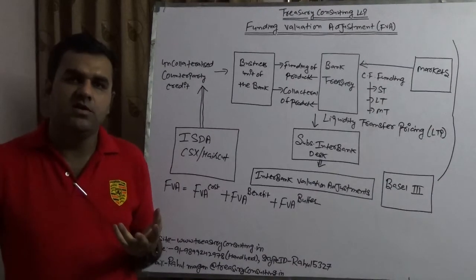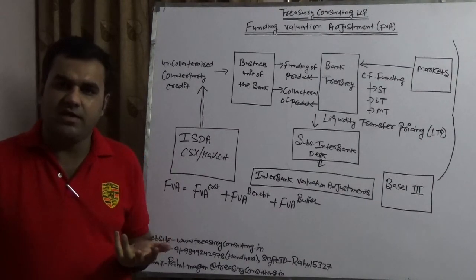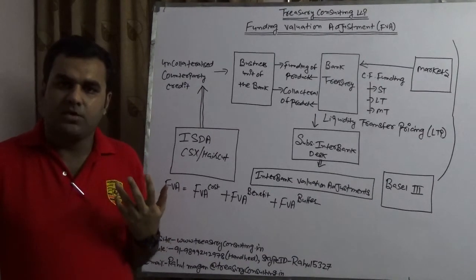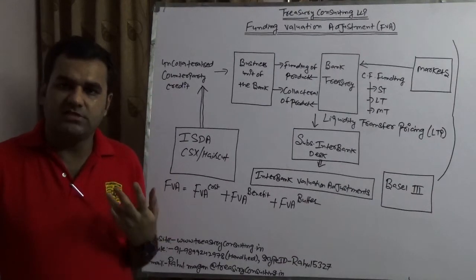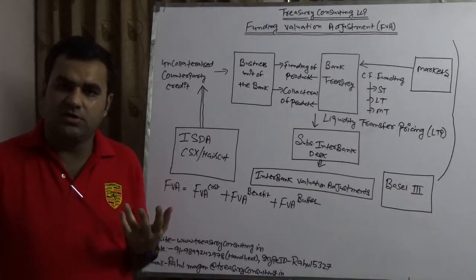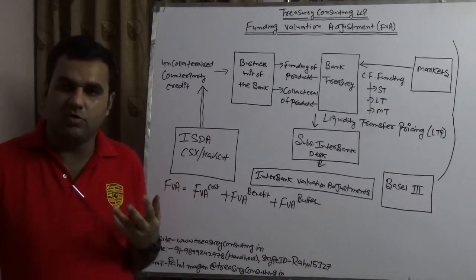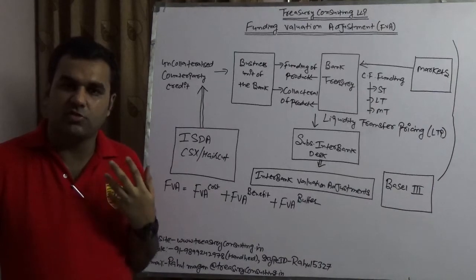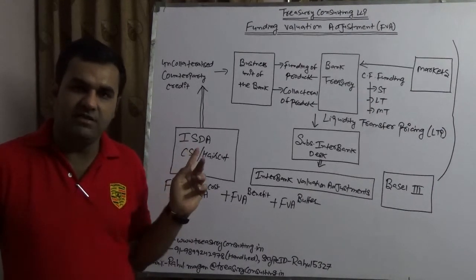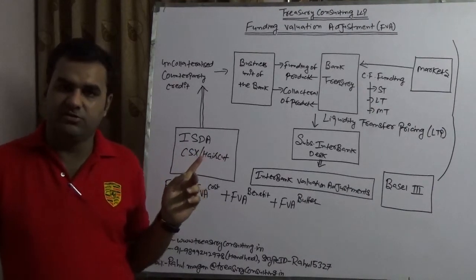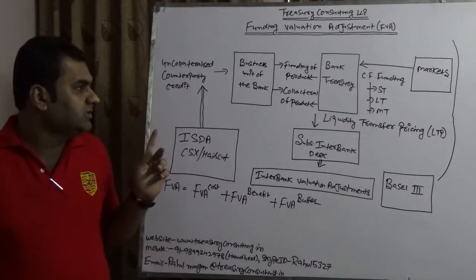MVA, Marginal Value Adjustment; KVA, Capital Value Adjustment; ColVA, which is Collateralized Valuation Adjustment; and FVA, which is Funding Value Adjustment. But today we are going to be specifically speaking on FVA, which is Funding Value Adjustment.